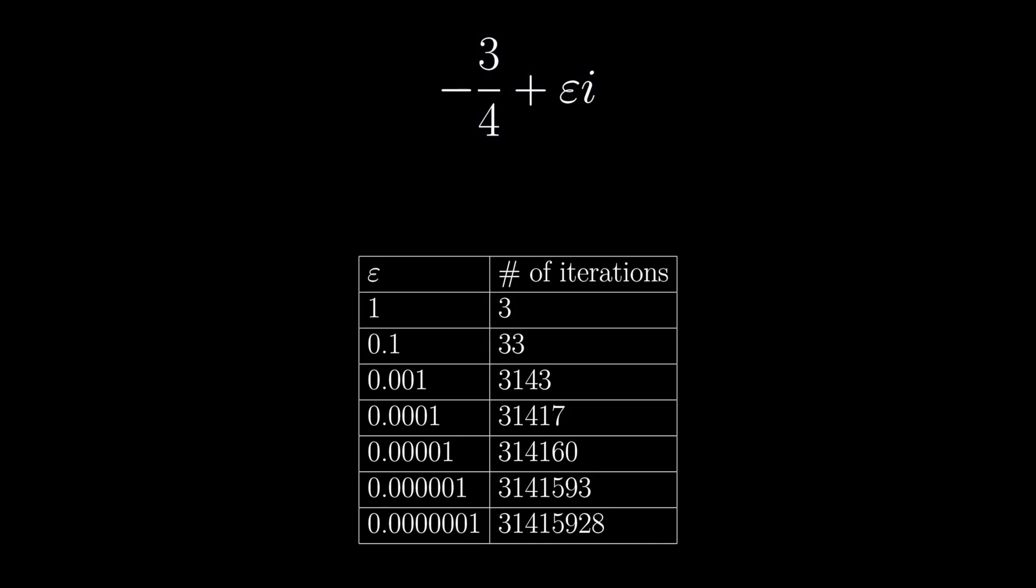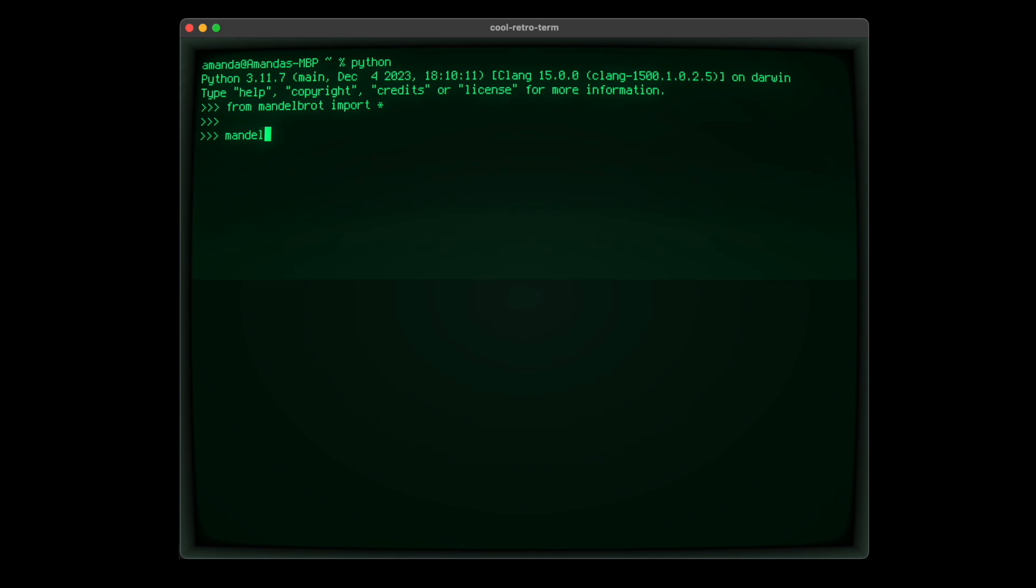The smaller it got, the closer the number of iterations represented the base 10 digits of pi. We can try this with our program. The first argument is minus 3 quarters, or minus 0.75, and the second argument is our epsilon value. With epsilon at 1, our function returns 3. At 0.1, 33. And at smaller intervals, we get closer to the digits of pi.